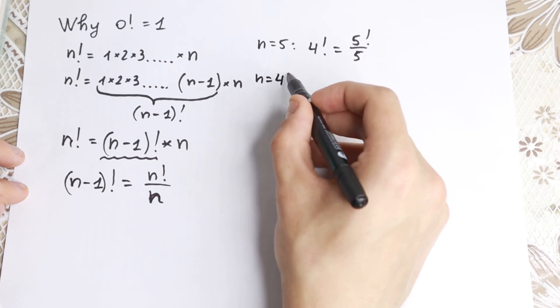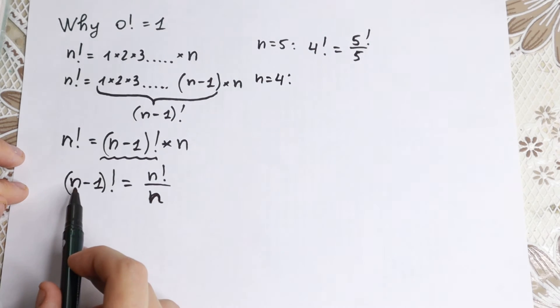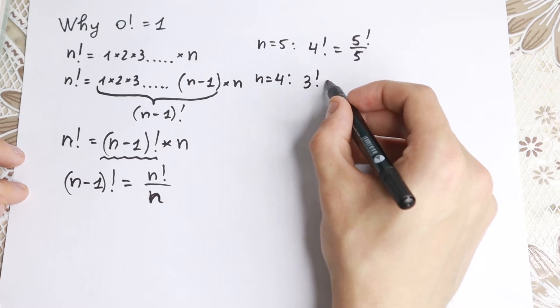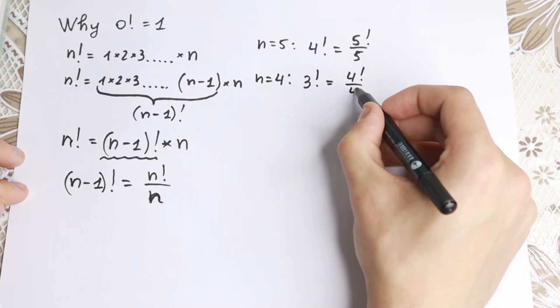We have n equal to 4. What we have as a result? We have 4 minus 1, 3 factorial, equal to 4 factorial over 4.